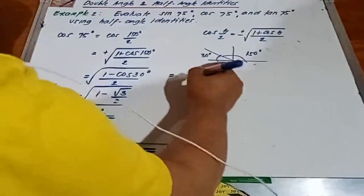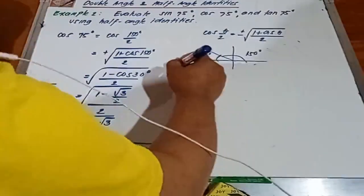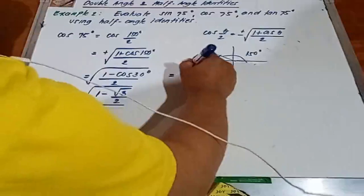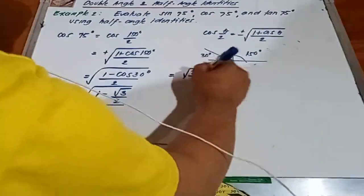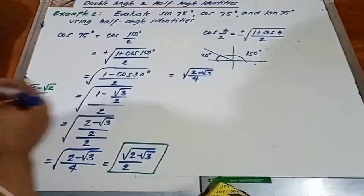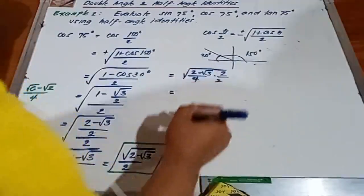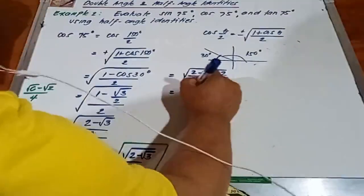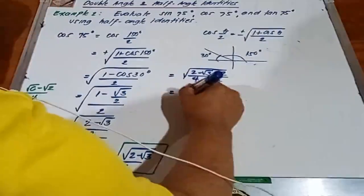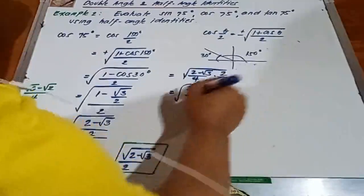So we have square root of 2 minus square root of 3 over 4. Then, I'm going to multiply the top and bottom by 2. Result is 4 minus 2 square root of 3 over 8. Next natin gagawin, gamitin natin yung a squared minus 2ab.